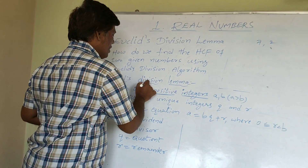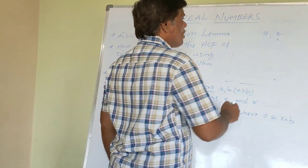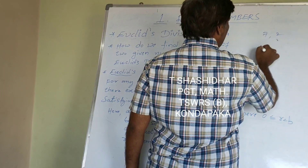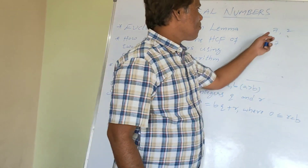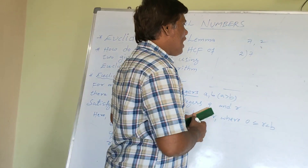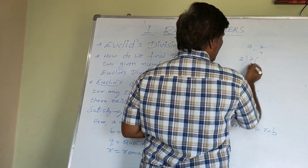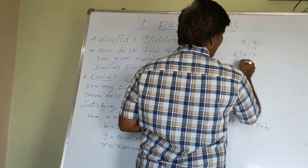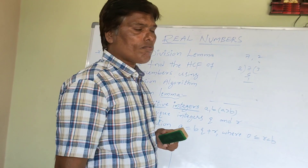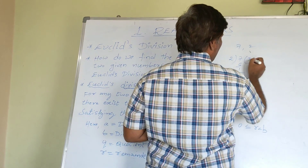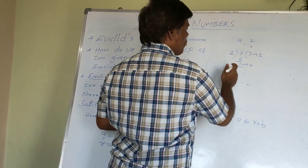It is a division lemma, so we have to do division here. While doing the division, let us start with the larger number as the dividend and the smaller number as the divisor. So dividing 7 by 2: 2 times 3 is 6, and 7 minus 6 is 1. So we got 3 as the quotient and 1 as the remainder. 2 is called the divisor and 7 is called the dividend.